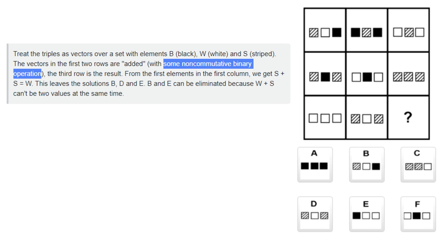The vector part means that when we add pictures together, we add the squares which are in the same position. For example, if we go by the first column, we add the middle square of the first picture with the middle square of the second picture to produce the middle square of the third picture. The same goes for left square plus left square equaling left square, and right square plus right square equaling right square.